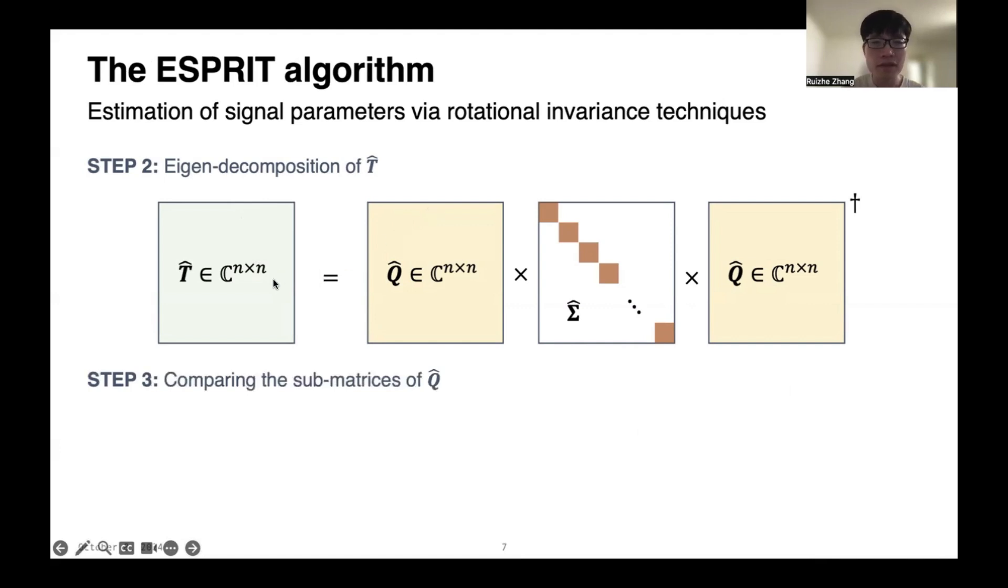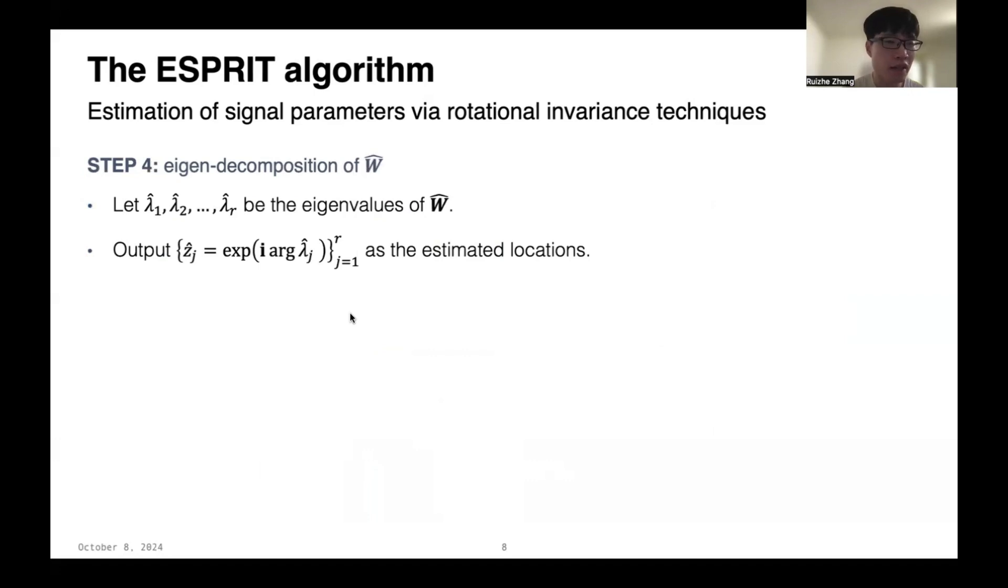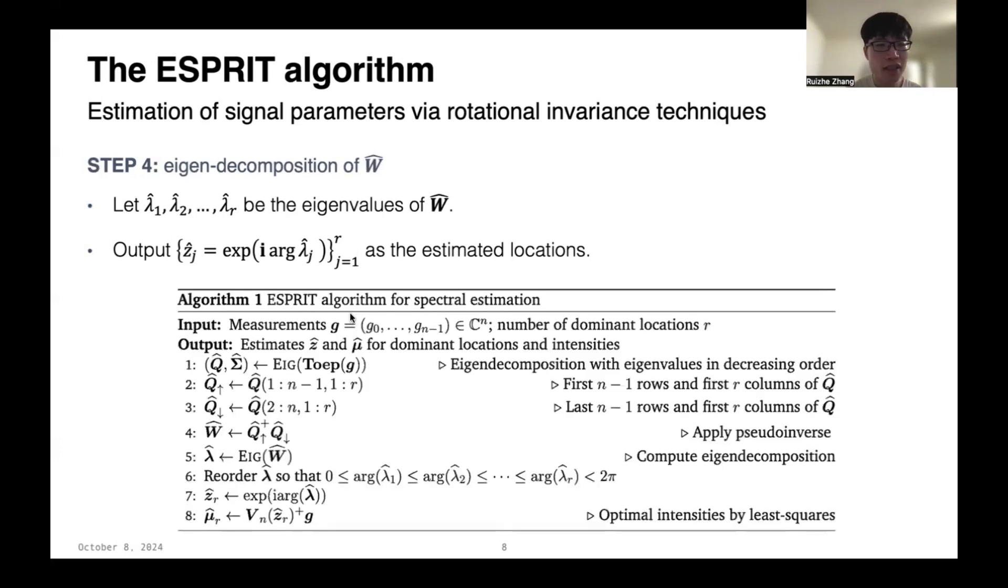Then, it extracts two sub-matrices of Q̂. The first one consists of the first n-1 rows and the first r columns, denoted by Q̂_up. And the second one consists of the second to the last rows of Q̂, and also the first r columns, denoted by Q̂_down. Then, it computes Q̂_up's pseudo-inverse times Q̂_down, which gives an r by r matrix, denoted by Ŵ. Finally, it computes the eigen decomposition of Ŵ, and uses the eigenvalues as the estimated locations. Here is the pseudo code for the ESPRIT algorithm. You can see it's very simple and easy to implement.